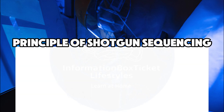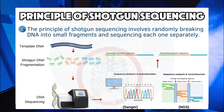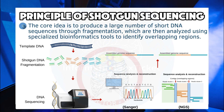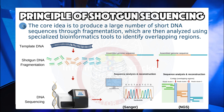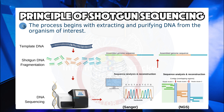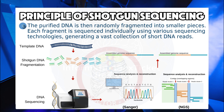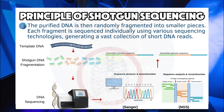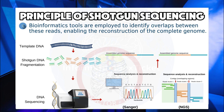NGS technologies are favored for their cost-effectiveness and speed, and they can efficiently manage the large volumes of data produced by shotgun sequencing. The principle of shotgun sequencing involves randomly breaking DNA into small fragments and sequencing each one separately. The core idea is to produce a large number of short DNA sequences through fragmentation, which are then analyzed using specialized bioinformatics tools to identify overlapping regions. These overlaps are crucial for piecing together the sequences and reconstructing the entire genome. The process begins with extracting and purifying DNA from the organism of interest. The purified DNA is then randomly fragmented, each fragment sequenced individually, generating a vast collection of short DNA reads. Bioinformatics tools are employed to identify overlaps between these reads, enabling the reconstruction of the complete genome.